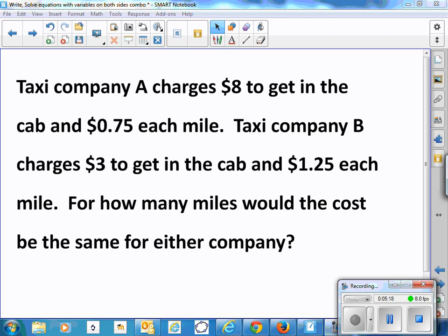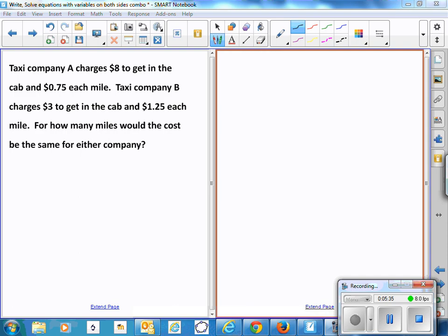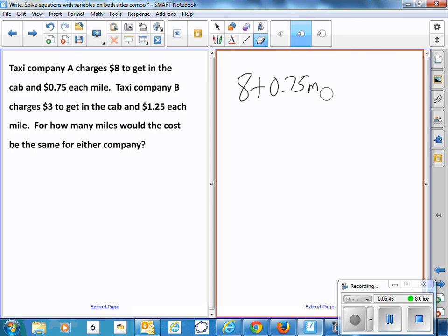So taxi company A charges $8 to get in the cab and $0.75 each mile. Taxi company B charges $3 to get in the cab and $1.25 each mile. For how many miles would the cost be the same for either company?